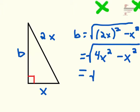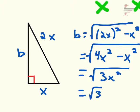When we combine terms, we get the square root of 3x², which we can split into two pieces: the square root of 3 and the square root of x², which equals x.